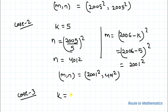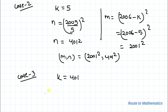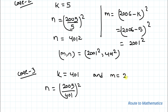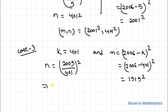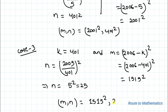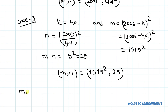In Case 3, we consider k = 401. From equation 2, n = (2005 / 401)² = 5² = 25. From equation 3, m = (2006 − 401)² = 1605². So for k = 401, we get m = 1605² and n = 25.